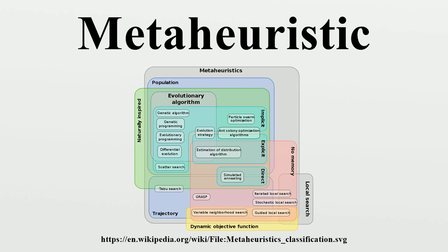Meta-heuristics may make few assumptions about the optimization problem being solved, and so they may be usable for a variety of problems, compared to optimization algorithms and iterative methods. Meta-heuristics do not guarantee that a globally optimal solution can be found on some class of problems. By searching over a large set of feasible solutions, meta-heuristics can often find good solutions with less computational effort than optimization algorithms, iterative methods, or simple heuristics. As such, they are useful approaches for optimization problems.